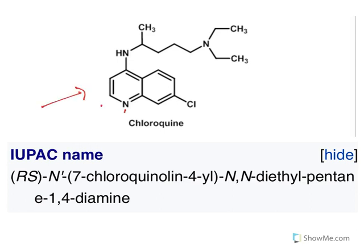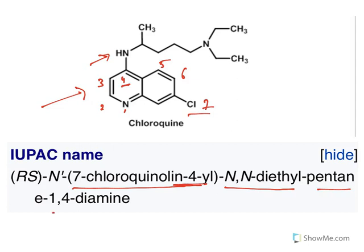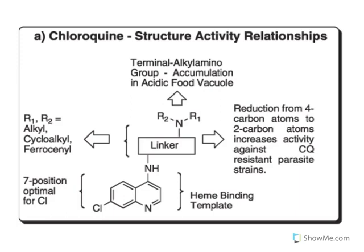For chloroquine, it is a 4-amino derivative: at the 4th position on the quinoline ring, there is an amine group, and at the 7th position, a chlorine substitution. The IUPAC name is 7-chloro-N,N-diethyl-pentane-1,4-diamine-4-quinolinamine: at the 4th position of quinoline there is a substituent, which is N,N-diethyl — two ethyl groups — and pentane-1,4-diamine, meaning five carbons with amine substitutions at positions 1 and 4.